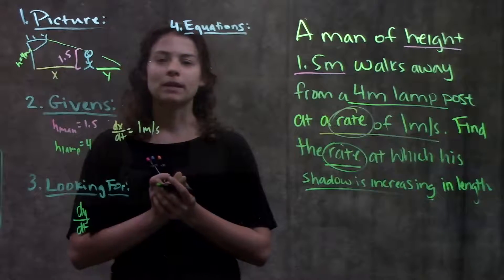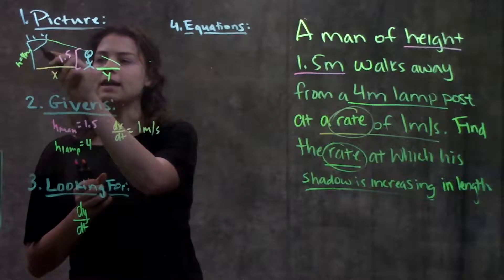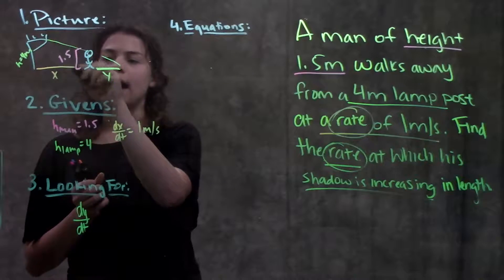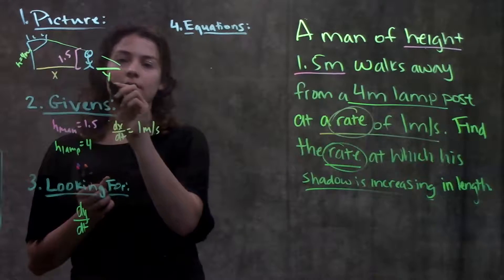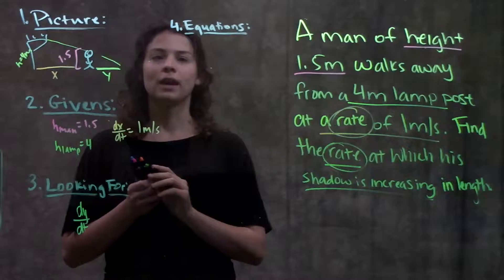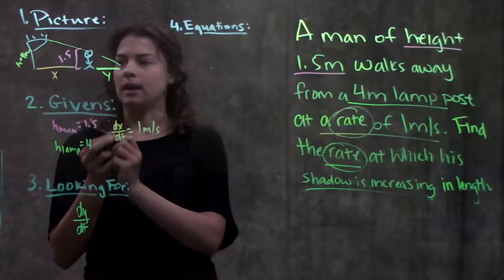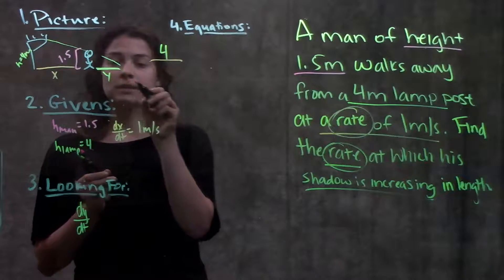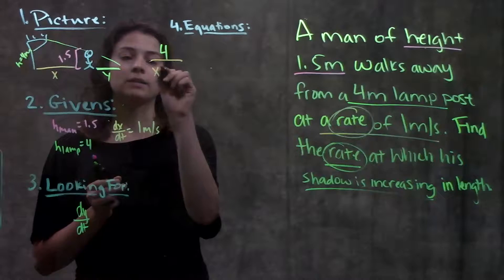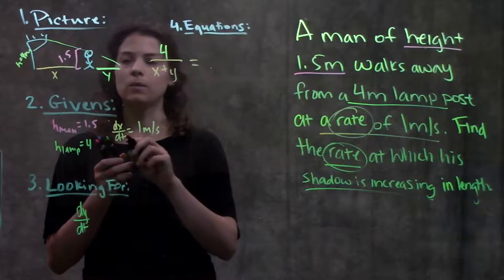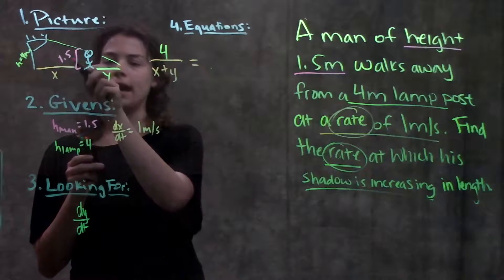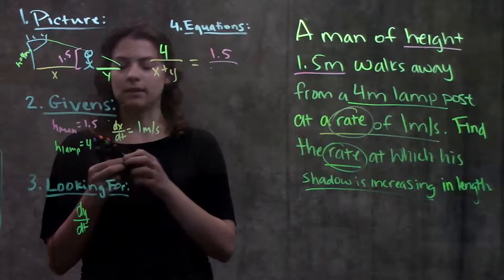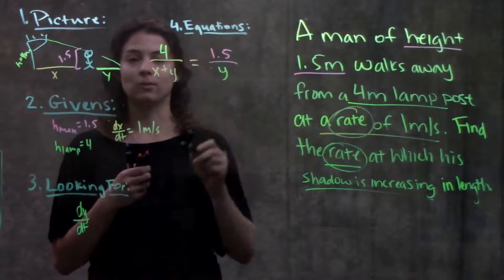So that's what I'm going to do here. I'm going to relate the height of my lamp post and the base of my lamp post with the height of my man and the base of the smaller triangle here the y. So my equation will end up being the height of the lamp post is 4 over the base of this big triangle is x plus y equals on the right side I have the height of my man is 1.5 over the base of this small triangle is just y.